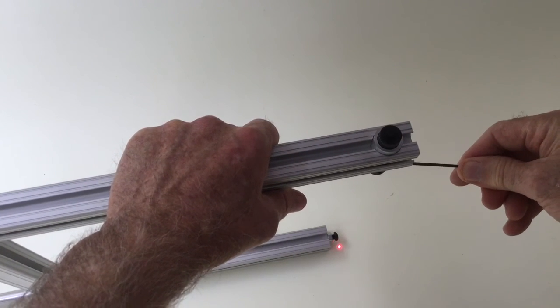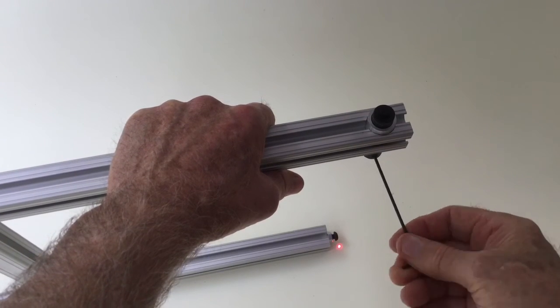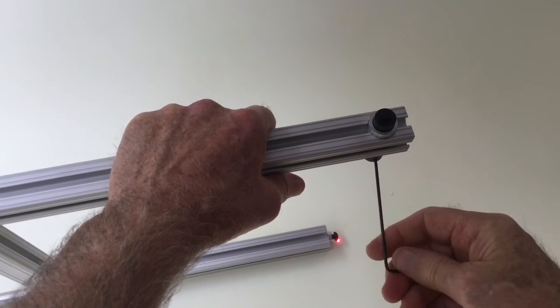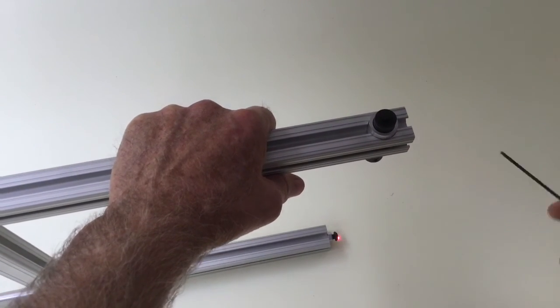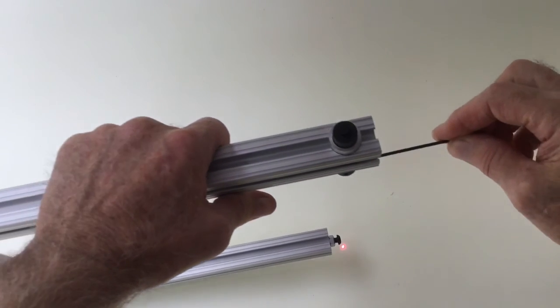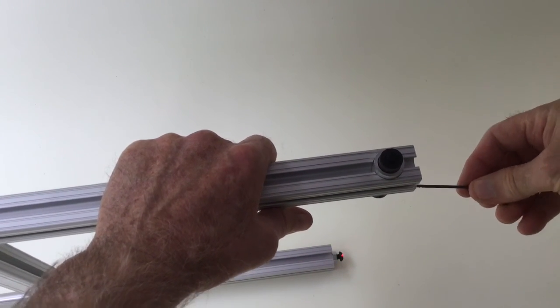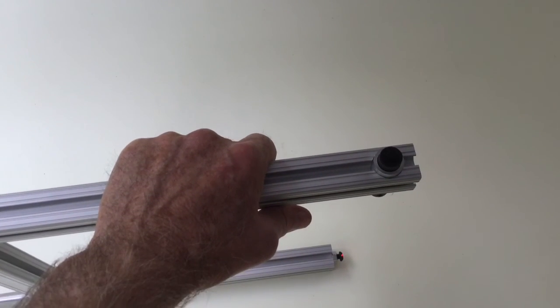Then I can go to the other one and adjust it over to where the laser's more centered on the screw. Then I can come back to the one at the end and adjust it to just touching the head of the screw. That's where we want it for an accurate measurement.